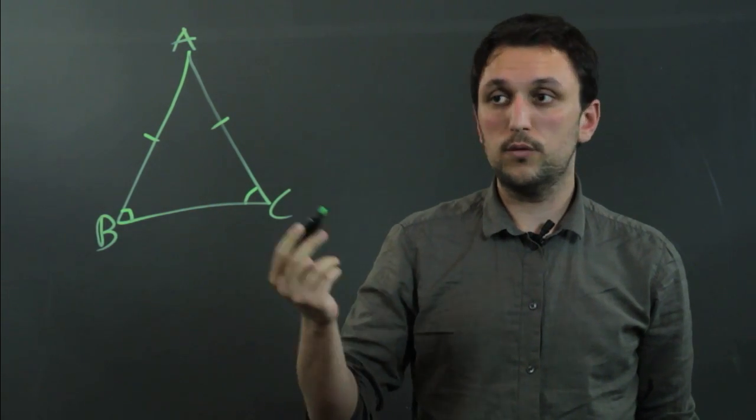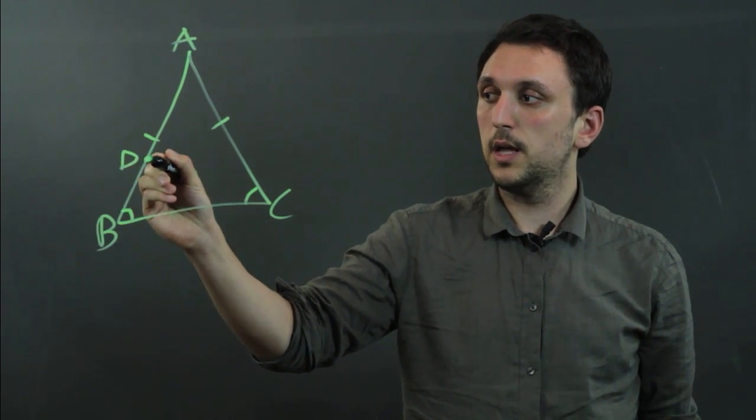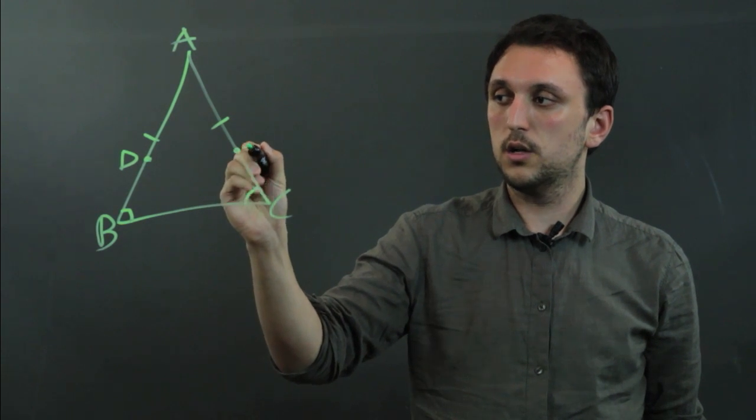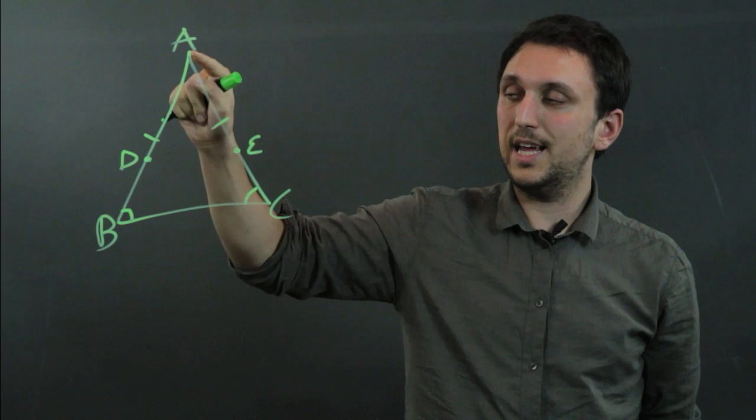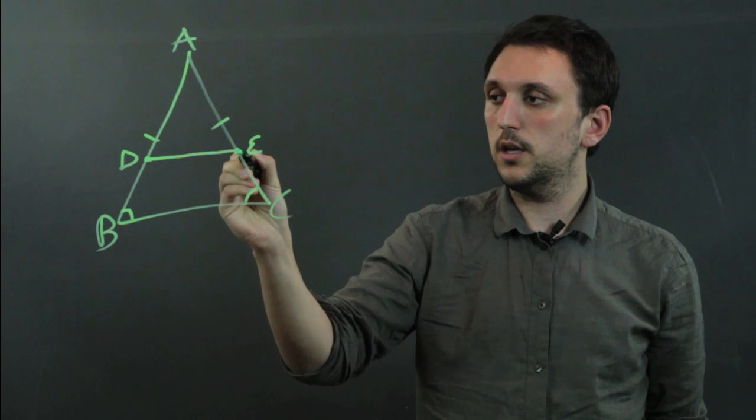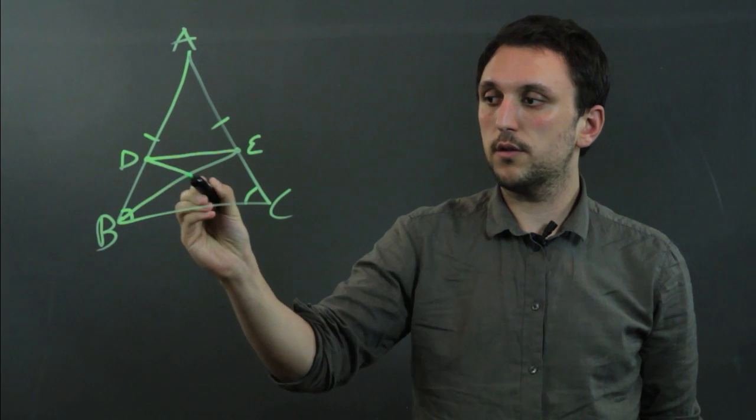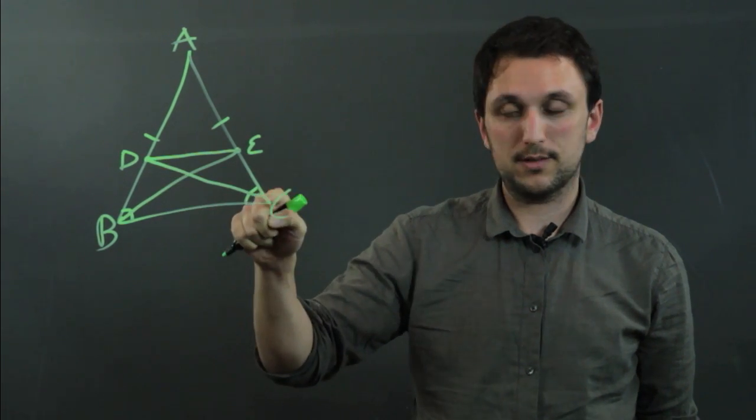But also, a way to prove it is that if you take a random point, call it D here, and go across here and call this E, so that AE equals AD, then you can draw this line, and you can draw this line bisecting B, and you can draw this line bisecting D, bisecting C.